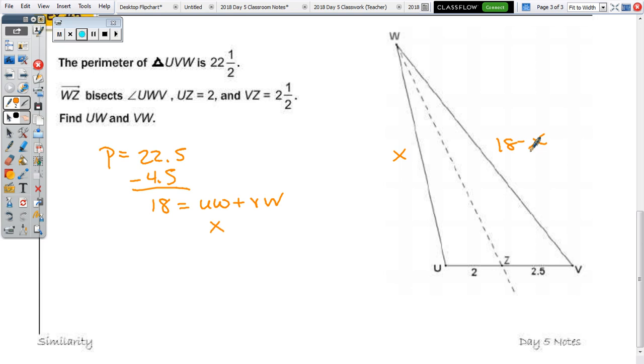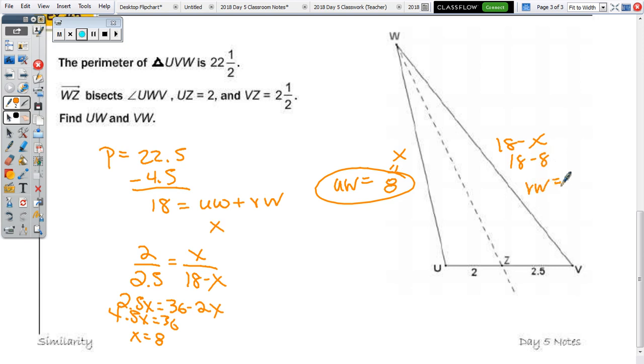So, now, we can set up the ratio 2 to 2.5 equals x to 18 minus x. So, 2.5x equals 36 minus 2x. Add the 2x and we get 4.5x equals 36. Now, divide 36 by 4 and a half. So, 36 by 4.5 is 8. So, x equals 8. So, this is 8. And that is UW. 18 minus 8, VW equals 10.